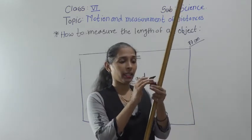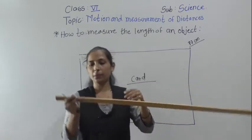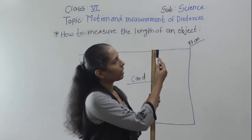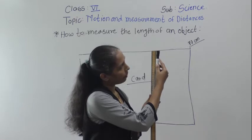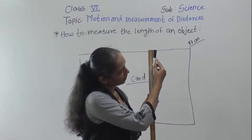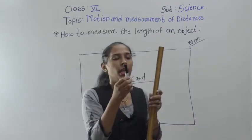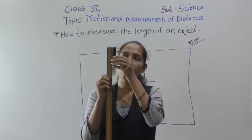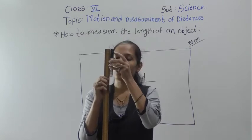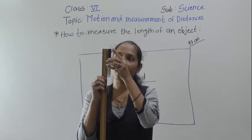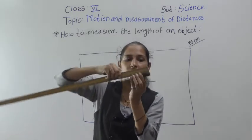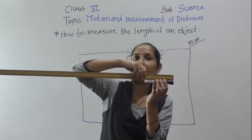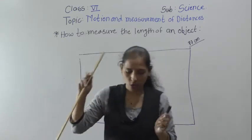Now let's take one more example — we will measure the length of this marker. I have kept the marker with the scale so that the zero mark is on the left side. The right side reading is 14, which means the length of this marker is 14 centimeters. So the right side reading gives us the length of the object.